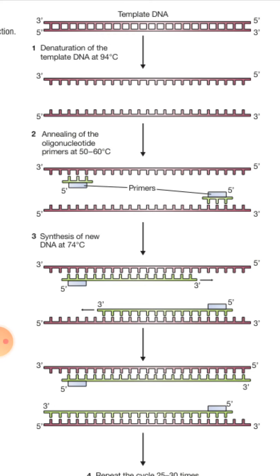The second step is annealing, where we set the temperature to around 50 to 60 degrees Celsius. At this temperature, the two separated DNA strands receive primers that attach to them. There are two primers: the forward primer and the reverse primer, and they attach to the individual DNA strands.